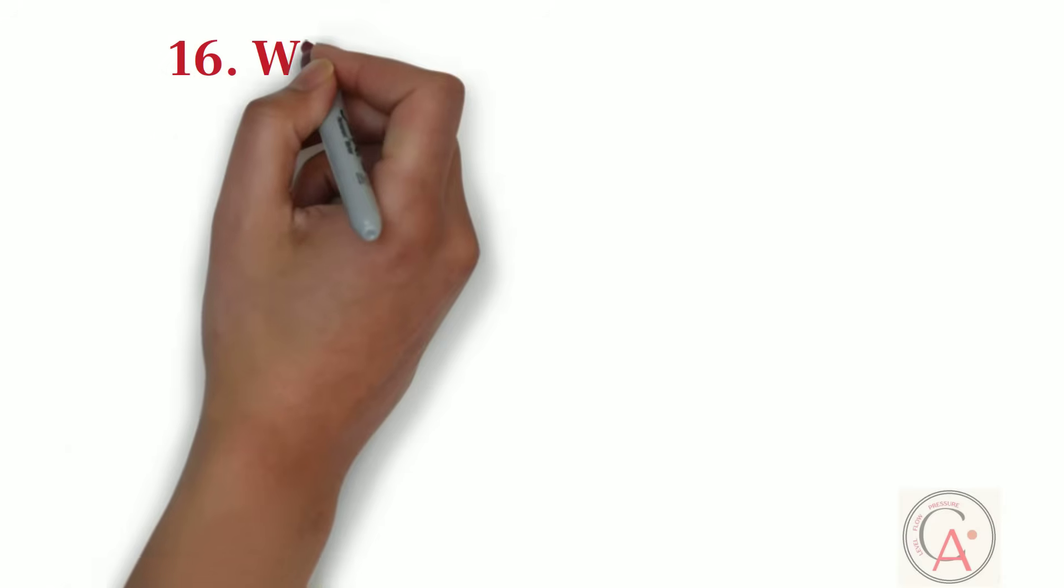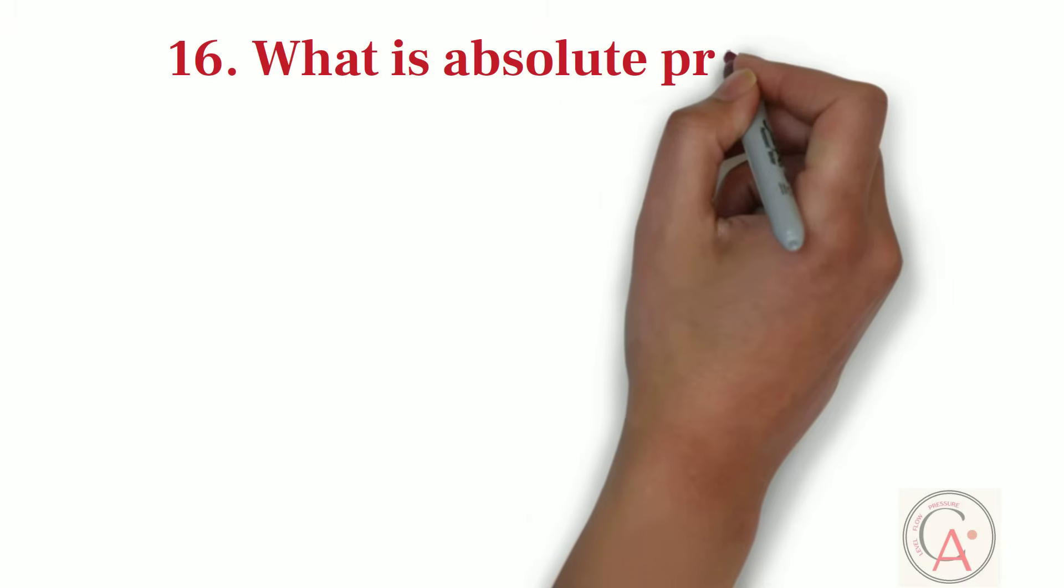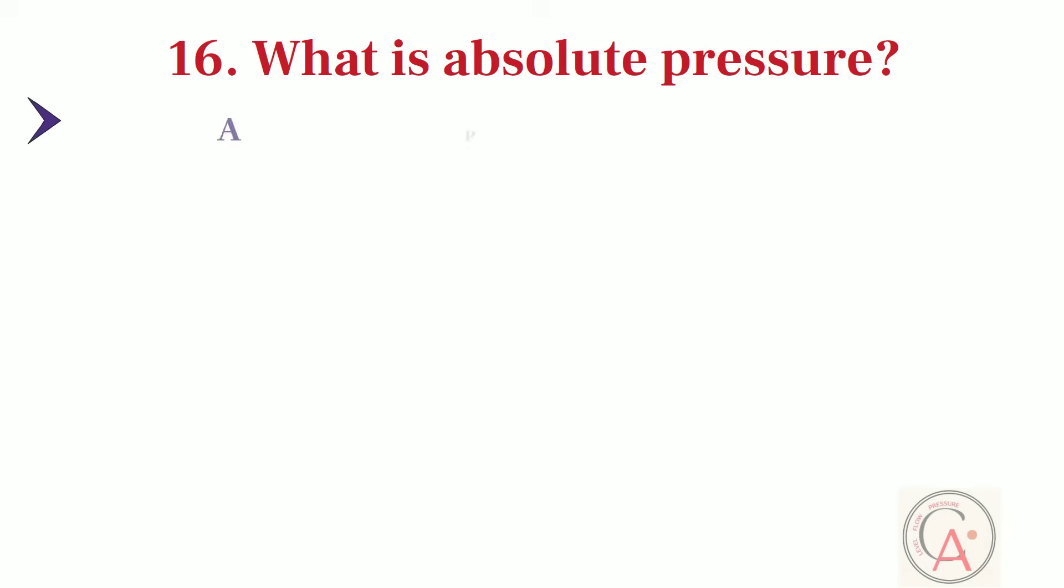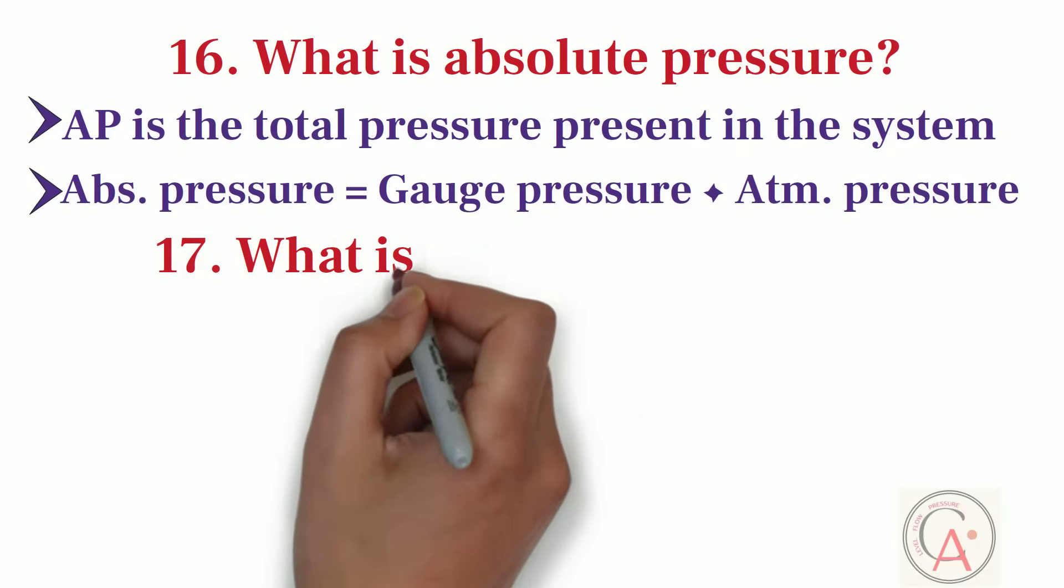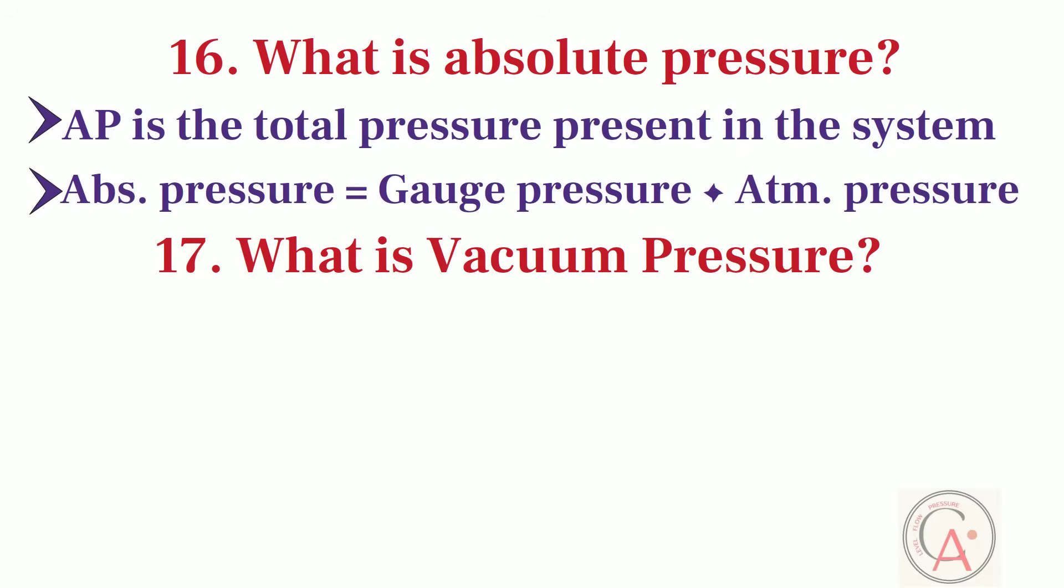Next question is, what is absolute pressure? Absolute pressure is the total pressure present in the system. Absolute pressure is equal to gauge pressure plus atmospheric pressure. Seventeenth question is, what is vacuum pressure? Any pressure below atmospheric pressure is known as vacuum pressure.